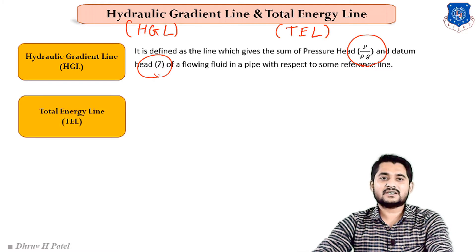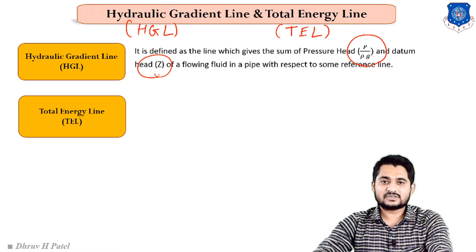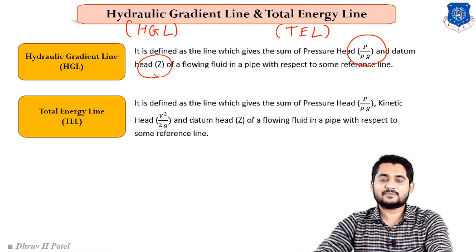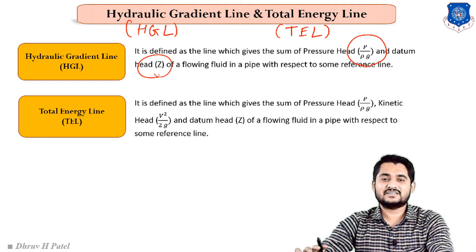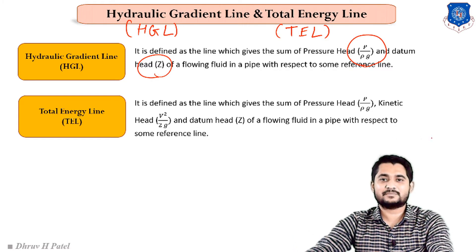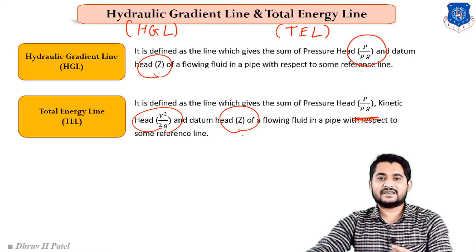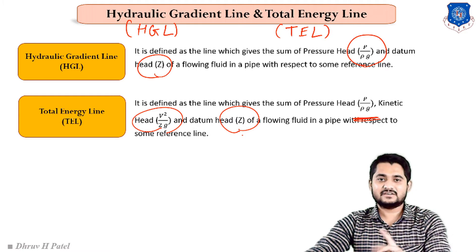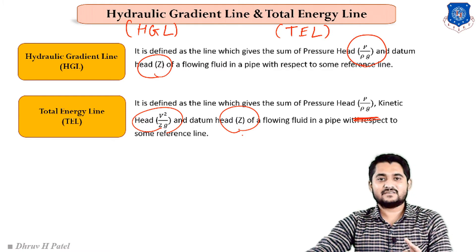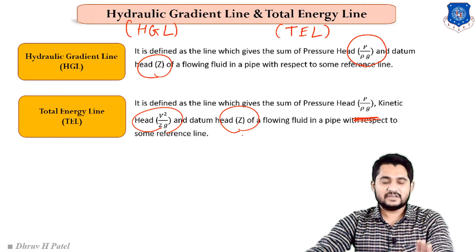Pressure head plus datum head is known as the hydraulic gradient line, i.e. P/ρg + z. The total energy line represents the total energy content in any pipe, expressed as pressure head plus kinetic head plus datum head z. In the hydraulic gradient line, only two heads are present — pressure head and z — whereas in the total energy line, all three types of heads are summed.